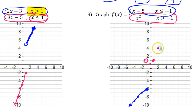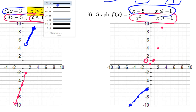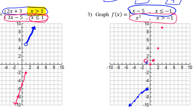So we have 2 comma 4 and 3 comma 9. That's as much as will fit on the graph, but it's enough to see how the parabola goes. And that's it — we've graphed the piecewise function with the parabola.